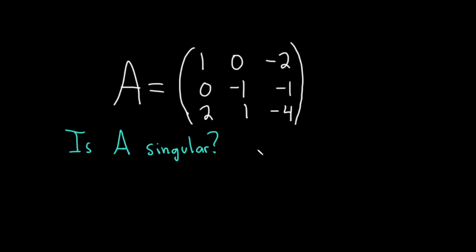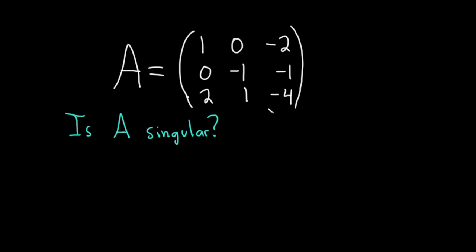In this problem we have a 3 by 3 matrix and we're being asked if it's a singular matrix. Basically, if the determinant of this matrix is 0, then we say it is singular. So all we have to do in this problem is compute the determinant. If it's 0, it's singular. If it is not 0, then it is not singular.